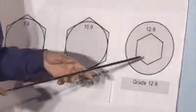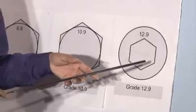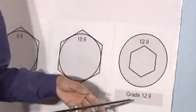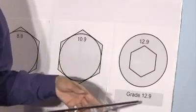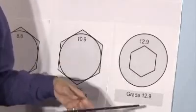When you're dealing with socket products, which are driven down with Allen keys or hex wrenches, they're usually a 12.9 grade. They do come in lesser grades, but I do suggest you use a 12.9 when you're using a metric socket.